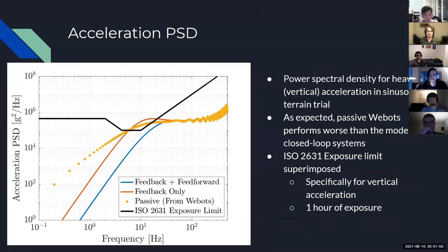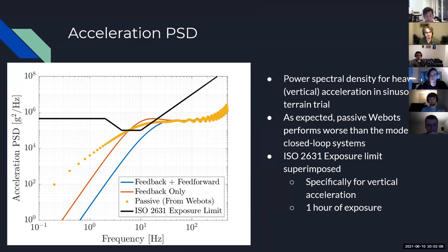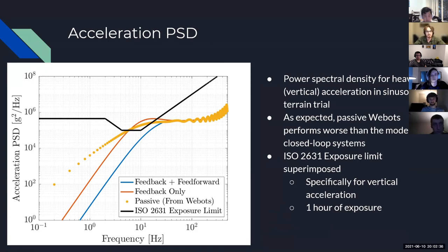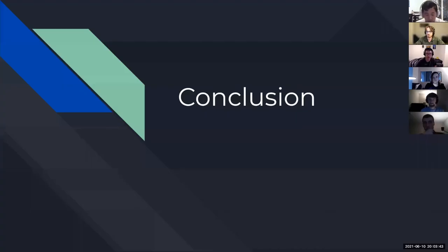On this final results slide, we have the power spectral density of the heave acceleration that the patient experiences, shown for feedback-and-feedforward, feedback-only, and the passive system. Both closed-loop systems perform significantly better than the purely passive system, and feedback-and-feedforward performs even better. Superimposed is the exposure limit for vibrations from the ISO 2631 standard, and you can see our system meets the requirements we imposed — we're very pleased with the results achieved.